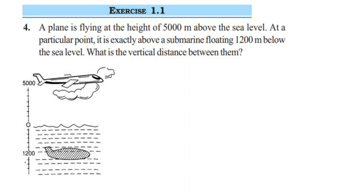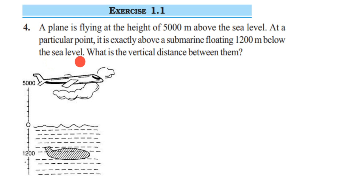Hey everyone, this is a question from Exercise 1.1, fourth question, chapter on integers of Class 7. The question is: a plane is flying at the height of 5000 meters above the sea level. At a particular point it is exactly above a submarine floating 1200 meters below the sea level. What is the vertical distance between them?